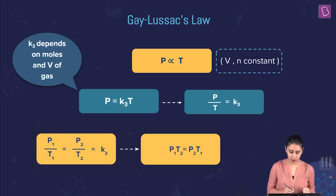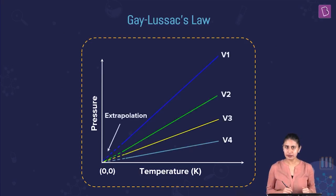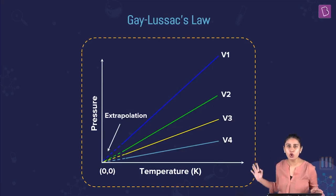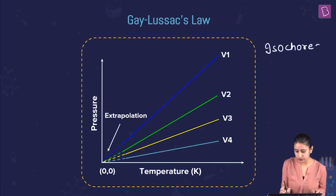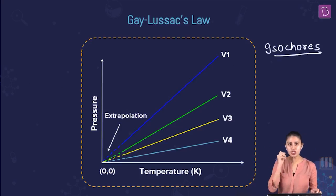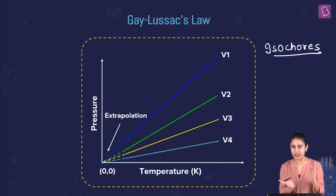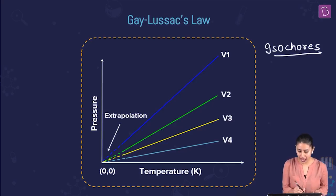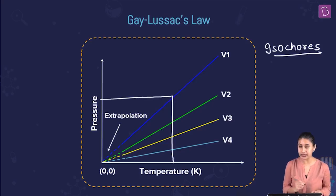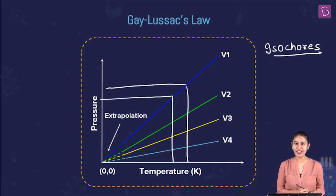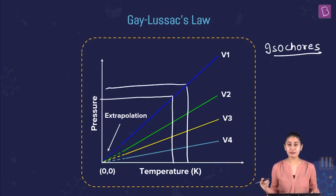Let's now look at the graph for Gay-Lussac's law. The graph looks something like this. We are taking different isochores — different plots each at a constant volume: the blue, the green, the yellow, the light blue. We have plotted pressure and temperature, and as the temperature is increasing, the pressure is increasing. So pressure and temperature are directly proportional to each other; P is directly proportional to T.